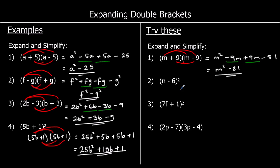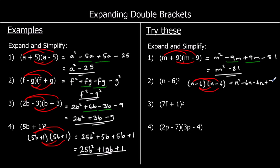For the second one: (n−6) times (n−6). Following the same steps: n times n is n squared. n times negative six is negative 6n. Negative six times n is also negative 6n. And negative six times negative six — negative times negative is positive — six sixes are 36. Collecting the like terms: negative 6n take away another 6n goes to negative 12n, so we've got n squared minus 12n plus 36.